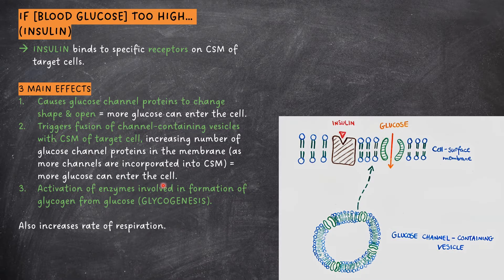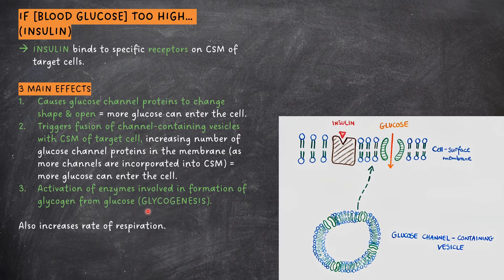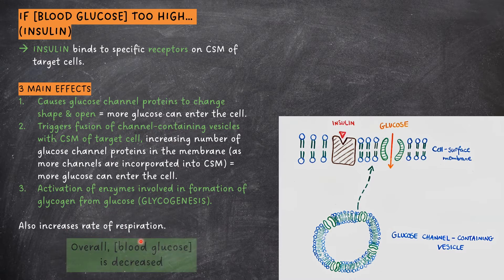Finally, the binding of insulin to receptors on the cell surface membrane of target cells also activates enzymes involved in the formation of glycogen from glucose, known as glycogenesis. Note that the binding of insulin also increases the rate of respiration, so more glucose is used up. Overall, the blood glucose concentration decreases back to the normal level.